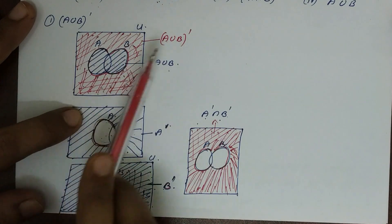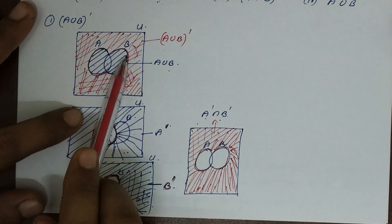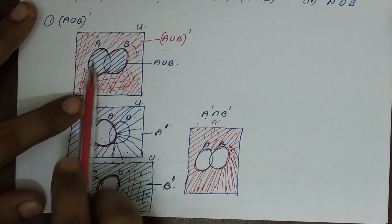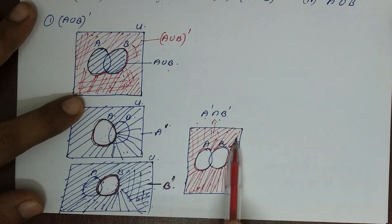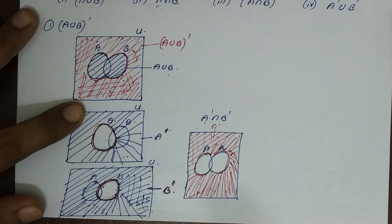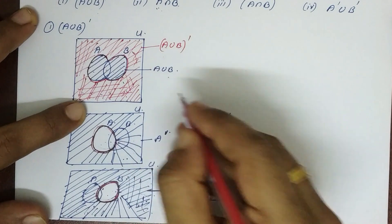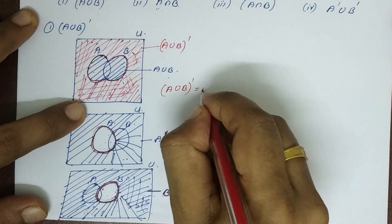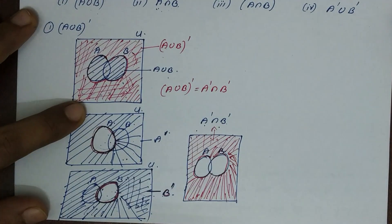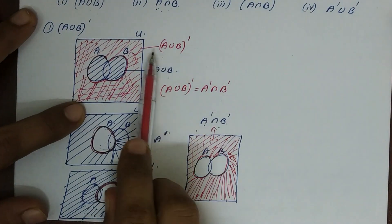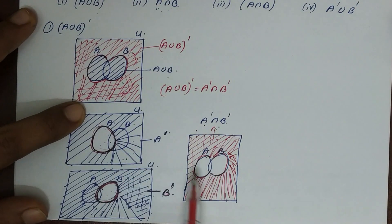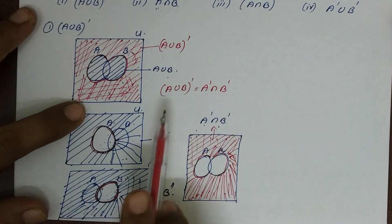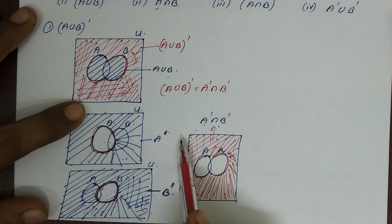We have to verify that A union B the whole complement is equal to A complement intersection B complement. These two diagrams shade the same region, confirming they are equal. This is the same figure.